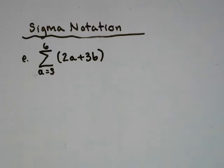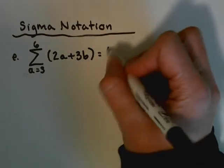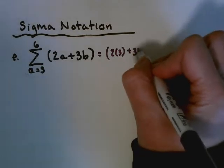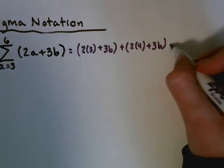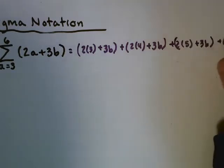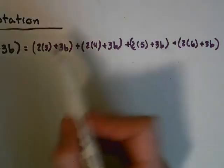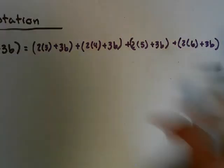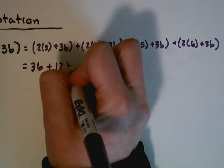My next example: from a equals 3 to 6 of the function 2a plus 3b. We plug in values for a but not for b, so this is 2 times 3 plus 3b, plus 2 times 4 plus 3b, plus 2 times 5 plus 3b, plus 2 times 6 plus 3b. Simplifying: 6, 8, 10, and 12 add together to give 36, and then we have 3, 6, 9, 12 — that's 12b's total.